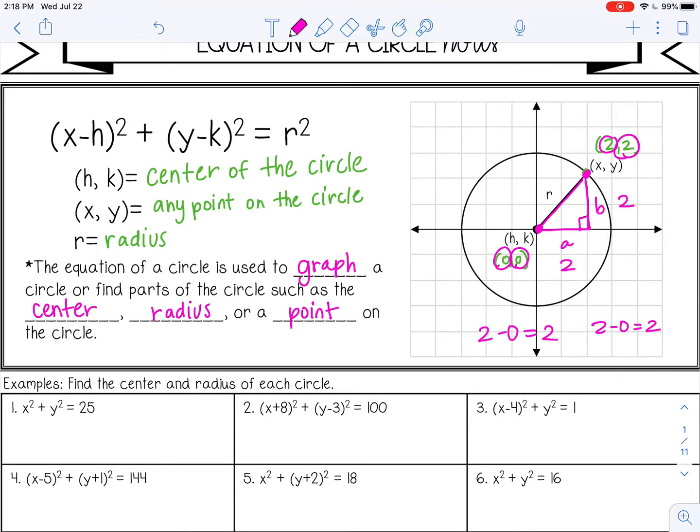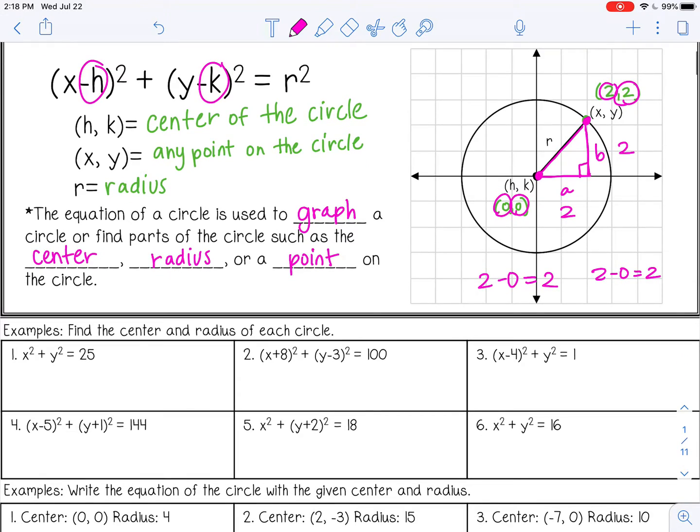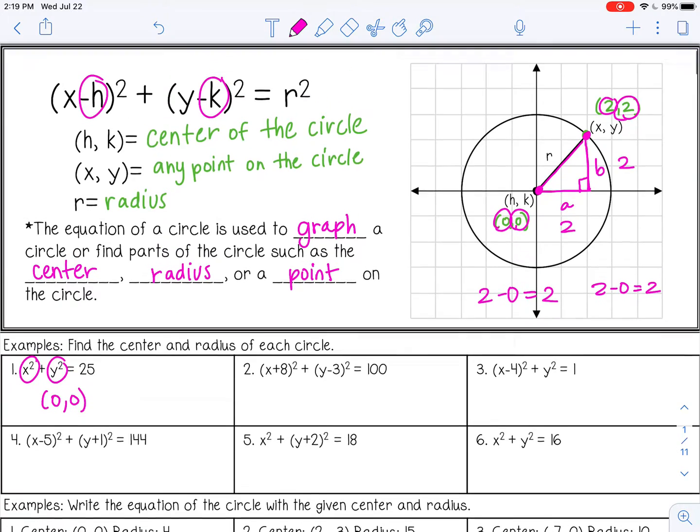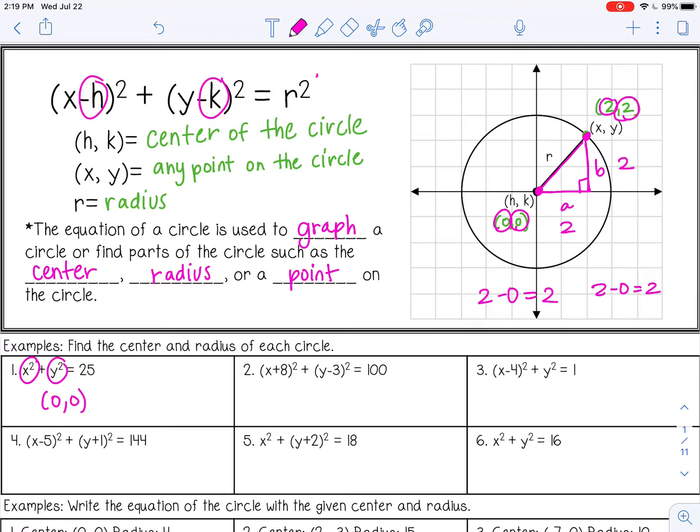So the center, remember, is h and k. But if you don't see an h and k, and this one doesn't even have parentheses, that means that the center of the circle is (0,0). Because if I write x minus 0 squared, that's just x squared. So just x squared will be written.